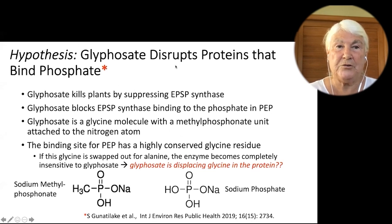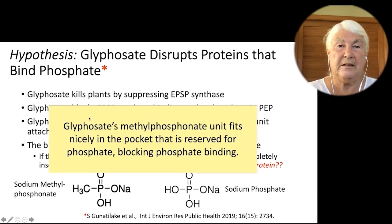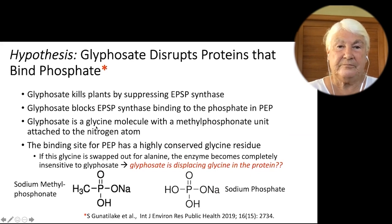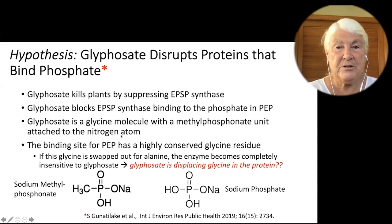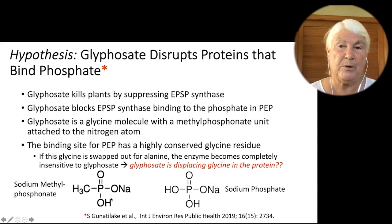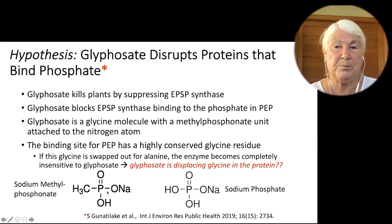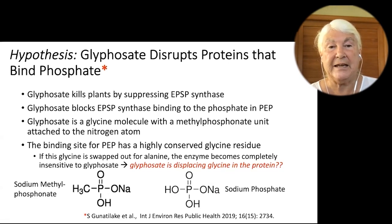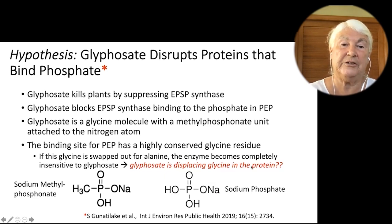My hypothesis is that glyphosate disrupts proteins that bind phosphate. It kills plants by suppressing EPSP synthase, an enzyme that binds phosphate in PEP (phosphoenolpyruvate) at a site where there's a highly conserved glycine. Glyphosate is also a glycine molecule, but with an extra methylphosphonate unit attached to its nitrogen atom. The binding site for PEP has a highly conserved glycine, and there's room reserved for the phosphate substrate — but glyphosate occupies that spot. Sodium phosphate and sodium methylphosphonate are very similar, so glyphosate fits into the spot reserved for the phosphate substrate, preventing the substrate from binding. This is what I think is happening in all the many crucial enzymes that bind phosphate.